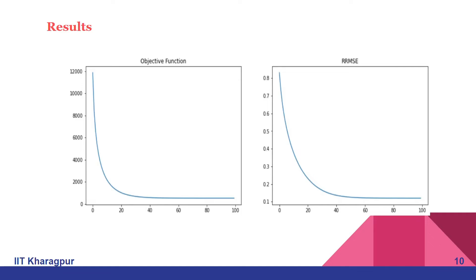On the right side, we can see the relative root mean square error. After every epoch we get some denoised image, and it will compare with the original image.